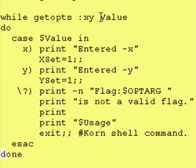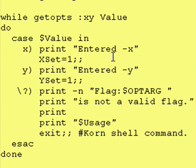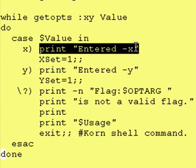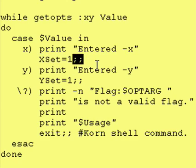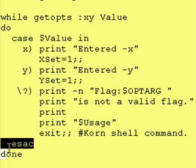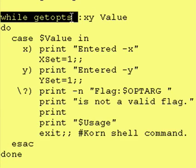If the variable value is set to x, we go to that portion of the case statement, which prints that the user entered a dash x, and this is where we set xset to 1. As always, you end your case selection with a double semicolon — that way it knows to stop there, go down to the end of the case statement, and continue from the done, which brings you back up to the top of the while loop.